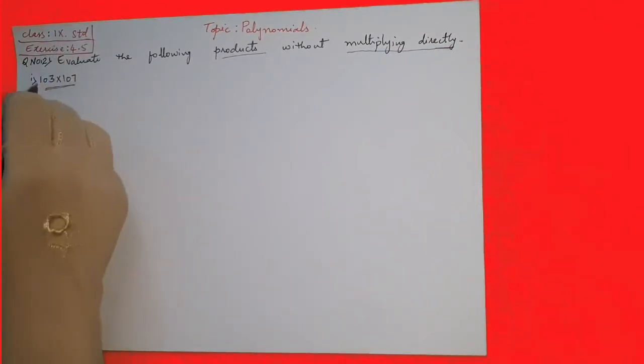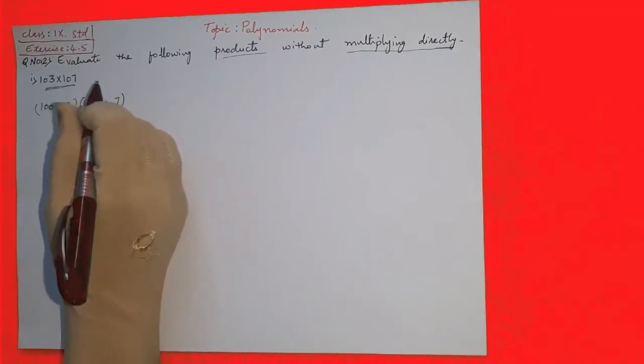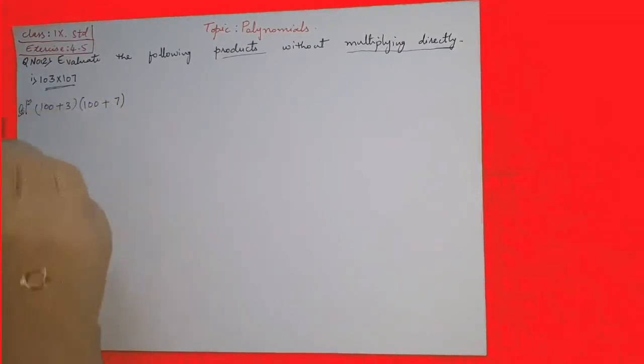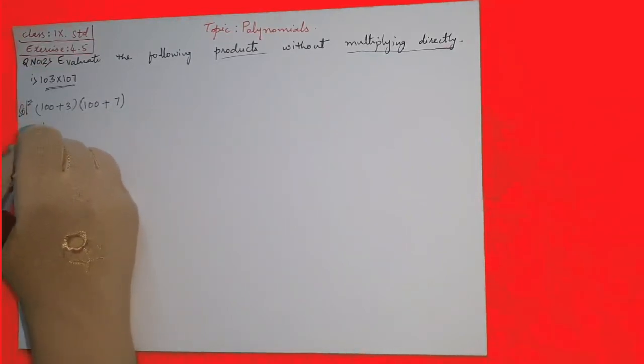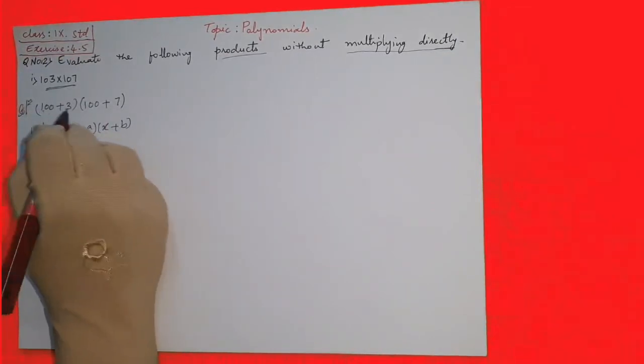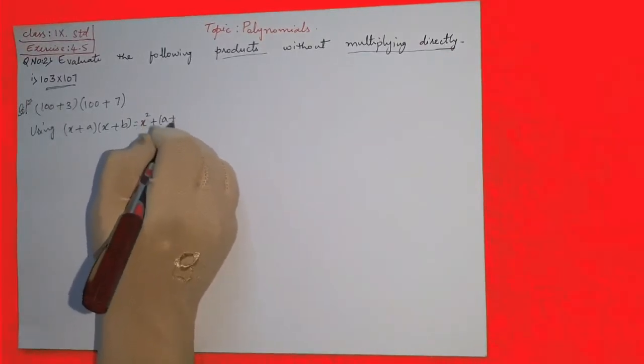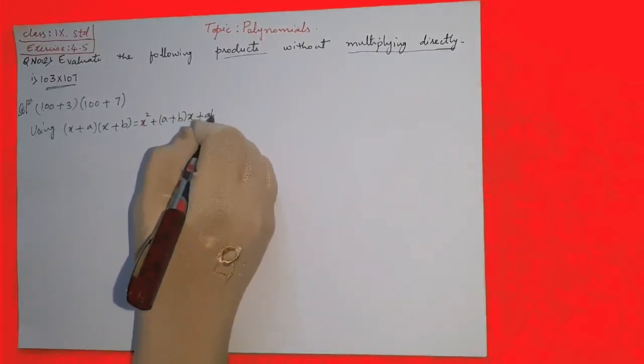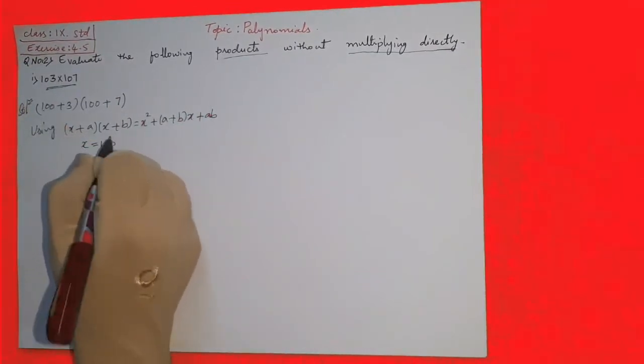So 103 into 107 is your first question. How can you split it? It can be written as 100 plus 3 and 100 plus 7. If you observe carefully, what is the identity form? x plus a into x plus b. Which identity we can apply here? 100 is x, a is 3, and b is 7.